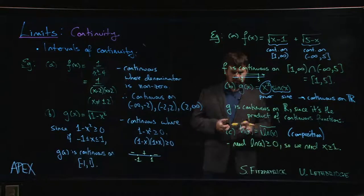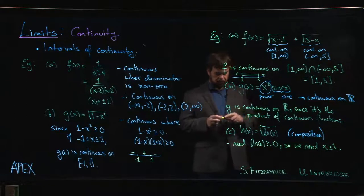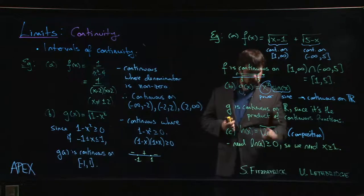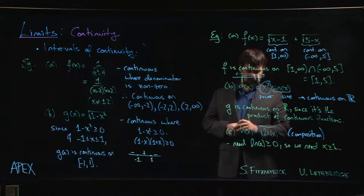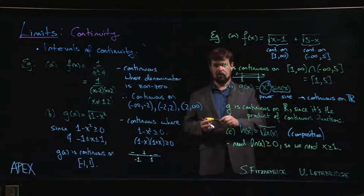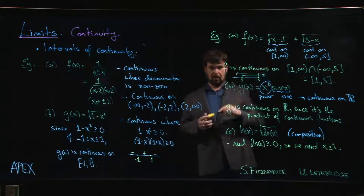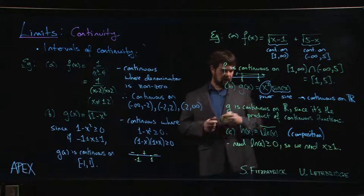So we need x to be bigger than or equal to one. So as long as x is bigger than or equal to one, the natural log is fine. The natural log is going to be defined and it's going to be bigger than or equal to zero. Because we know the natural log kind of grows, it gets bigger and bigger as x gets bigger. So the natural log is fine.